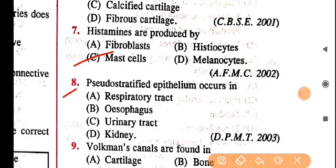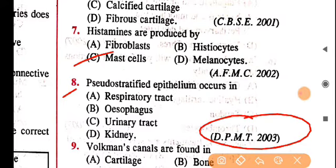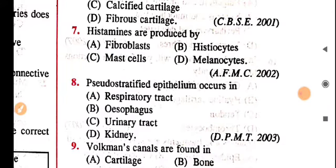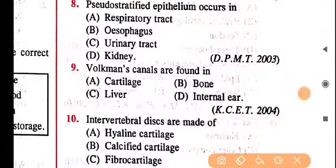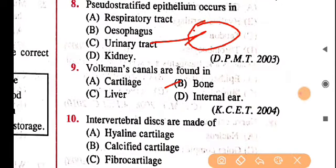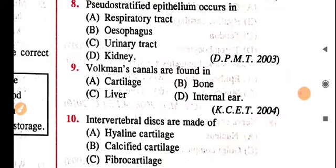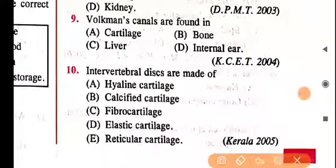Histamines are produced from mast cells, which are part of areolar tissue. Next, question 8: pseudo-stratified epithelial tissue occurs in the respiratory tract — this is higher level content asked in DPMT, but I'm telling you anyway. Volkmann's canals are an important part of bone — the holes in bone are called Volkmann's canals.